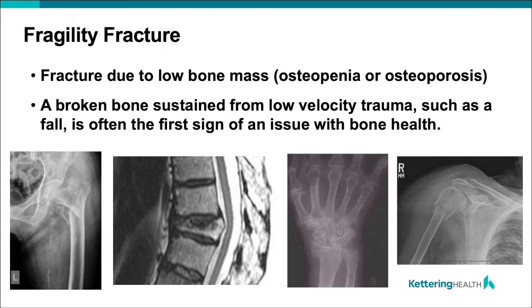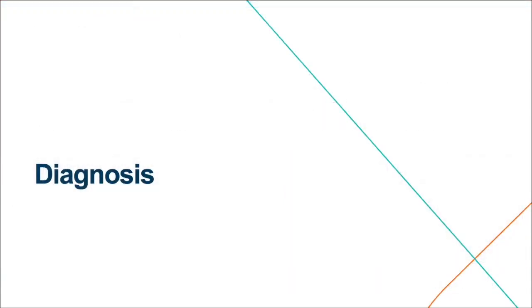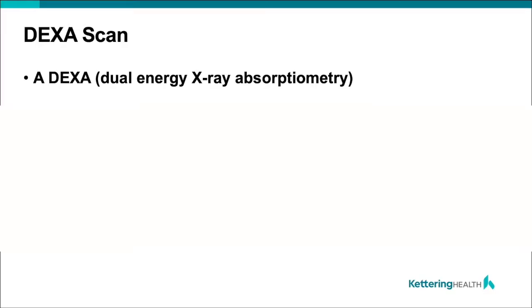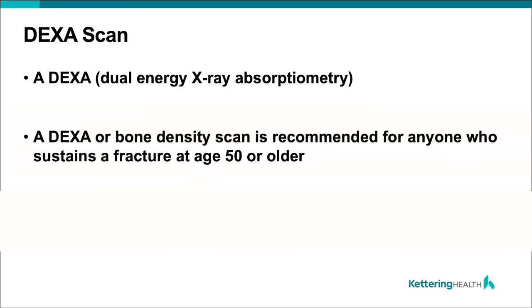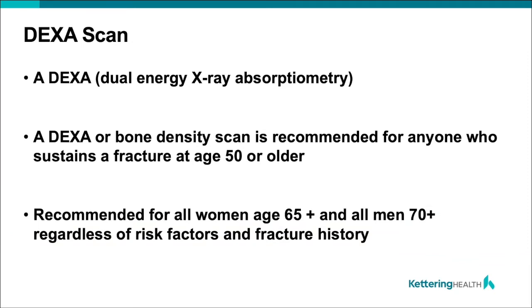If we can help prevent the hip fracture from occurring, we'd be saving a lot of lives. The first step in treating osteoporosis is identifying it, and the way we do that is with the DEXA scan — Dual Energy X-ray Absorptiometry. It's a machine similar to an x-ray that takes about 15 minutes and measures your bone mineral density. It's recommended for all women age 65 and older and men age 70 and older, regardless of risk factors.